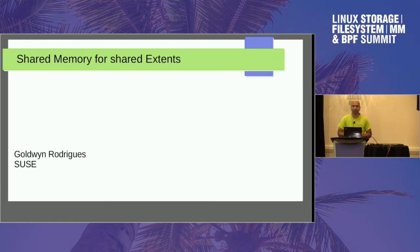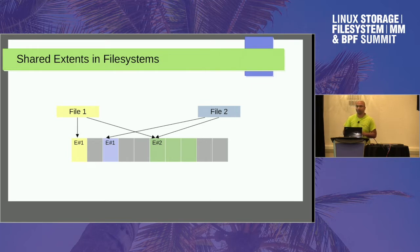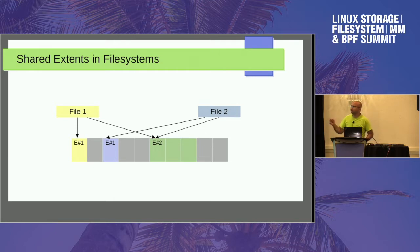We have a problem with CoW file systems with respect to memory usage, primarily for shared extents. Shared extents occur when two files share the same extent — this can happen due to clone file range, snapshots, or reflinks — a normal copy operation with reflinks. You can have shared extents where file inodes point to the same blocks in the device.